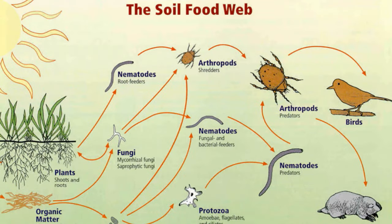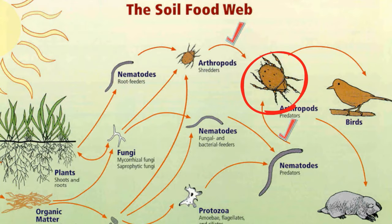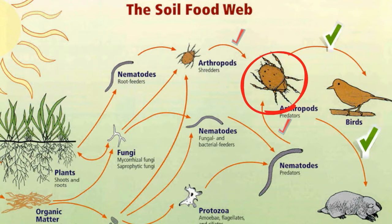In this soil food web, you will notice that there are arrows pointing towards the larger arthropod and away from the arthropod. Arrows pointing towards the arthropod indicate that energy is flowing towards the arthropod. So in this food web, the arthropod receives energy from the smaller arthropods and nematodes, and the birds and animals receive energy from the arthropods.